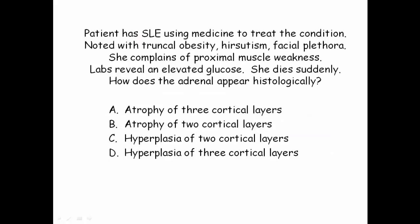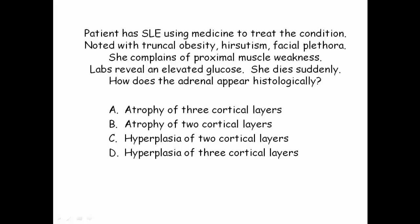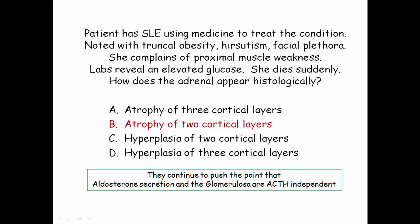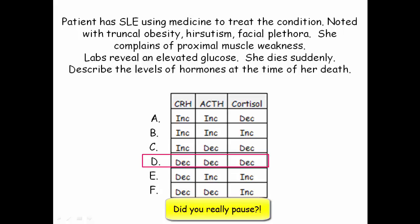The next classic question: a patient with lupus is treated with a medication that produces every sign and symptom of Cushing's, then experiences sudden death. What happened to the adrenal gland? Steroids suppressed the inner two cortical layers; the outer glomerulosa layer remains functionally normal under the influence of the juxtaglomerular apparatus. This is a major NBME tested point. The hormonal response: exogenous steroid use suppresses the entire HPA axis — CRH, ACTH, and cortisol are all suppressed.